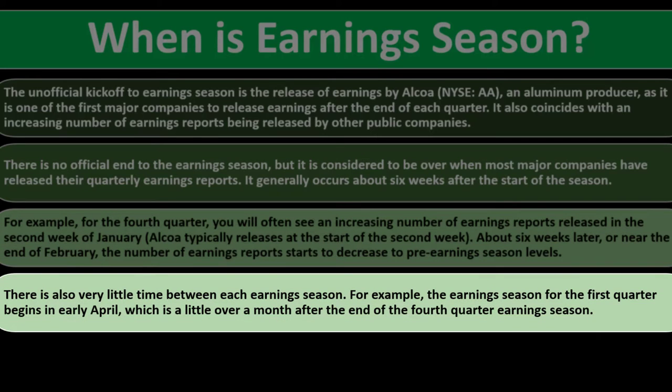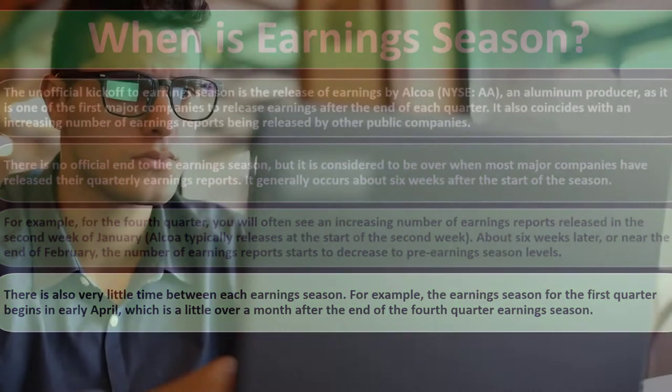There is also very little time between each earnings season. For example, earnings season for the first quarter begins in early April — just a little over a month after the end of the fourth quarter earnings season — so the first quarter's data from January, February, and March is issued out in early April to provide timely information.